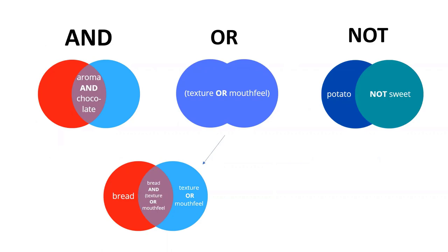We have three main Boolean operators for building searches. AND is absolutely basic to searching. You have one concept — in this case, aroma — and a second concept, chocolate. If you combine aroma AND chocolate, then all results will contain both words. So you won't get results about the texture or lipid composition of chocolate unless they also have information about the way chocolate smells.